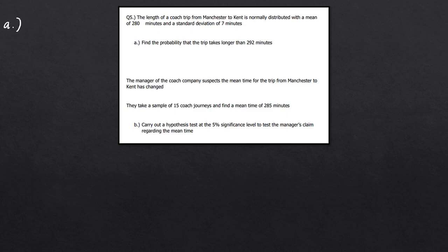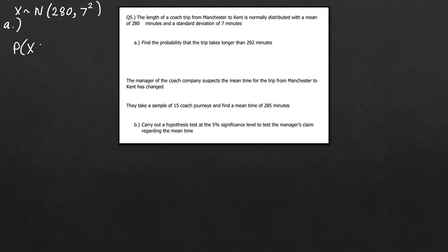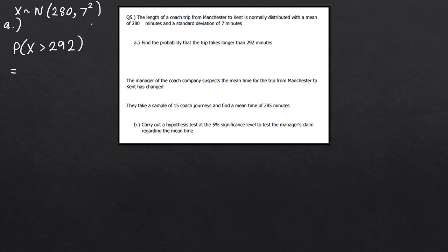For part A, we define X ~ N(280, 7²) and we want P(X > 292). Because this is greater than 292, the lower bound in the calculator is 292 and the upper bound is a large number like 9999, with mean 280 and standard deviation 7. Inputting this correctly gives 0.0432.